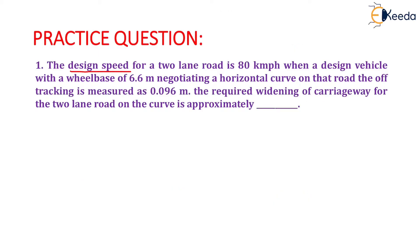The design speed for a two lane road is 80 km per hour. When a design vehicle with a wheelbase of 6.6 meters negotiates a horizontal curve on that road, the off-tracking is measured as 0.096 meters.